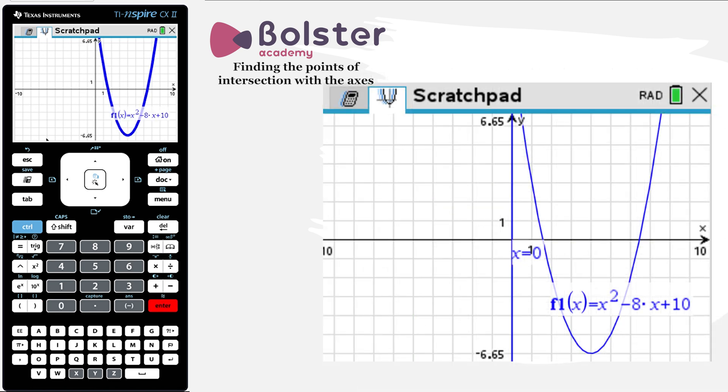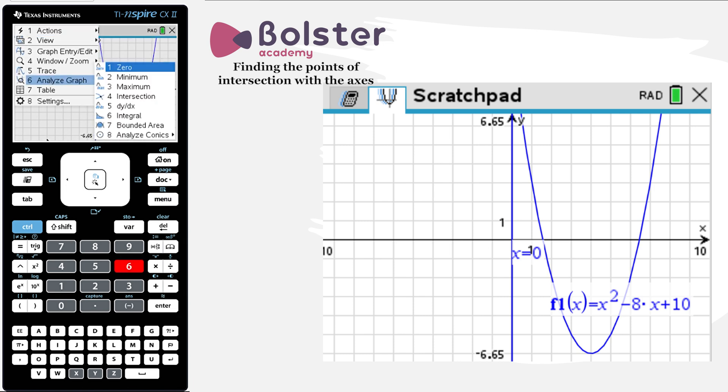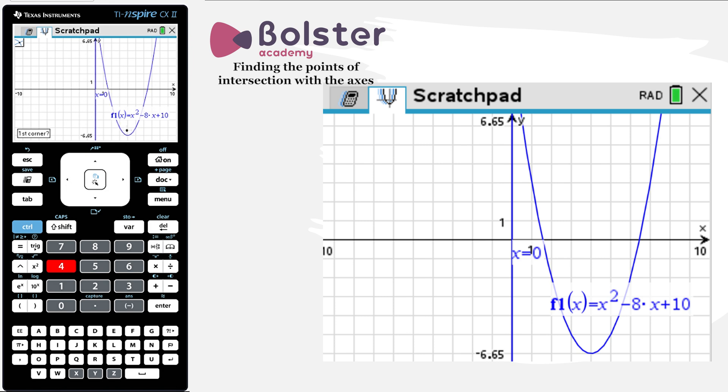Currently displayed on the screen, the graph isn't crossing the y-axis. If we tried to find an intersection point between this graph and the equation x equals zero, we wouldn't get any intersection points. So if we hit menu, graph relation, we put in x equals zero. And then if we try and find an intersection point, nothing's going to show up. We can choose our first corner up over here, our second corner down the bottom right, and we get no intersection found within the specified bounds.